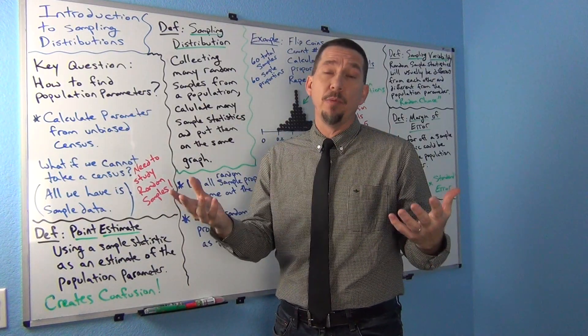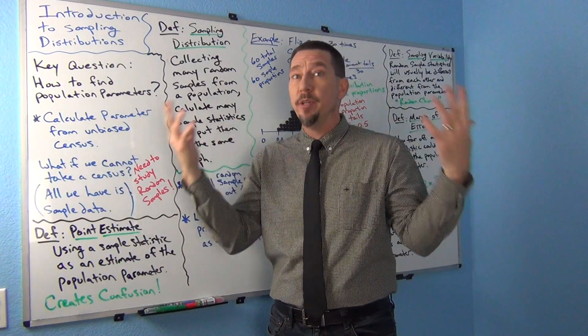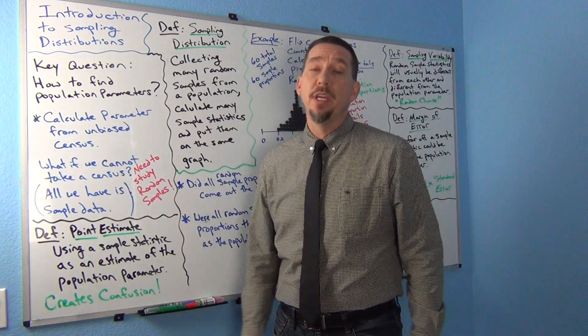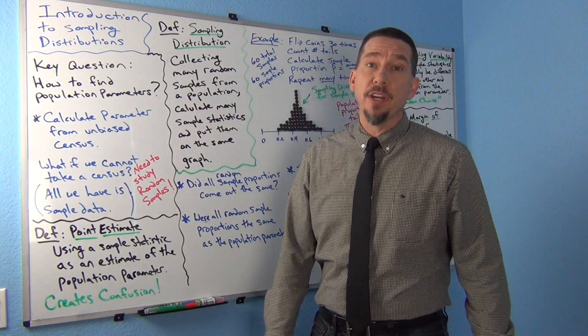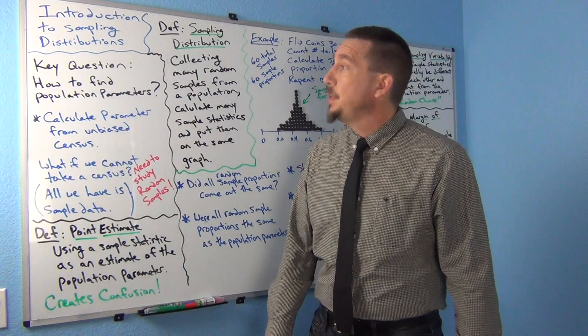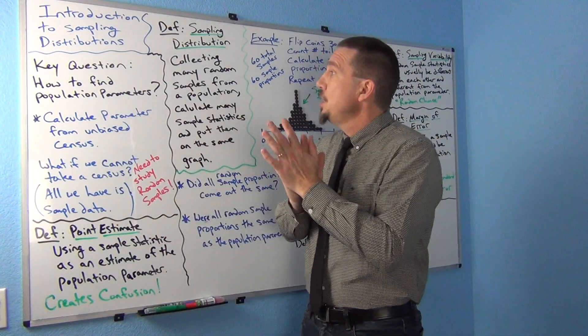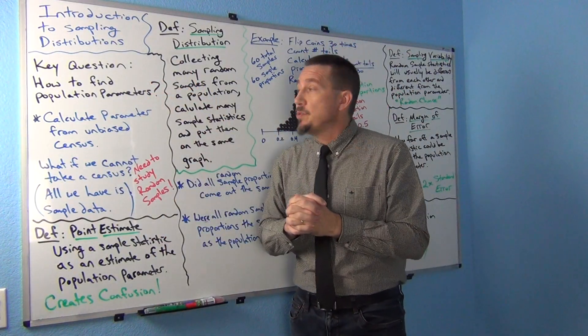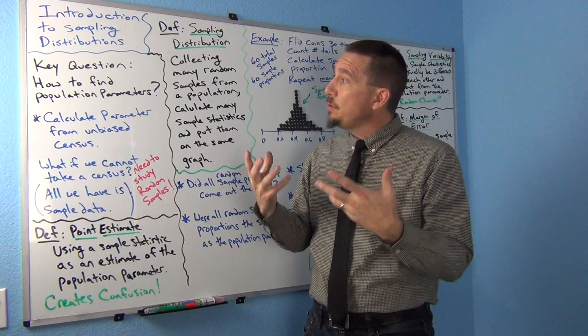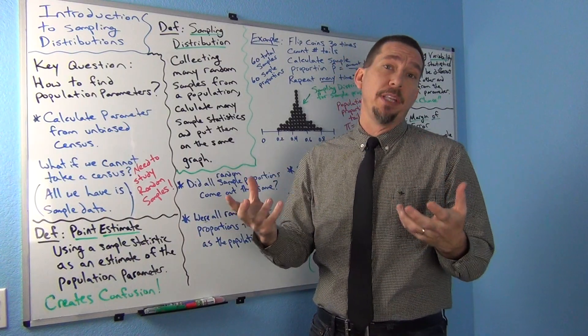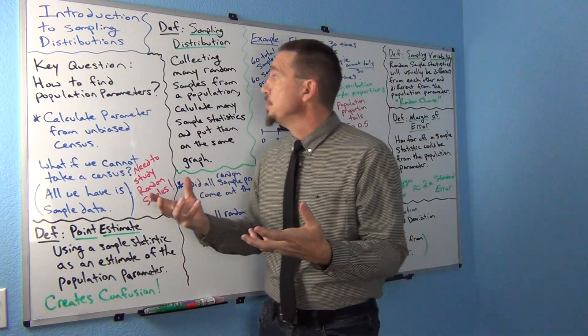How do we figure out what's going on with millions of people? It's very difficult. The key question in this unit is really about how do we find population parameters.